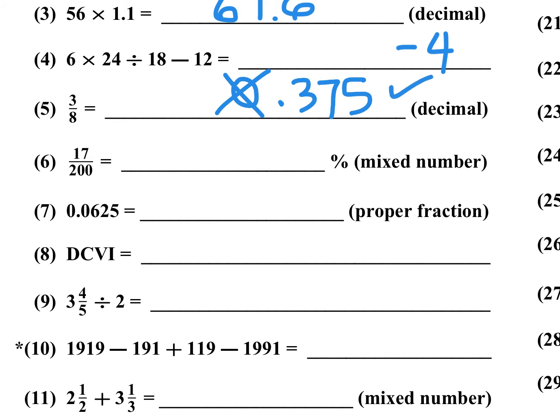Number 6: 17 over 200 as a percent. You multiply by 100, so it's 17 over 2. But they want the answer as a mixed number, so you cannot write 17/2 and you cannot write 8.5 — it has to be 8 and one-half, because the answer must be a mixed number. 8 and a half is the only correct answer here.